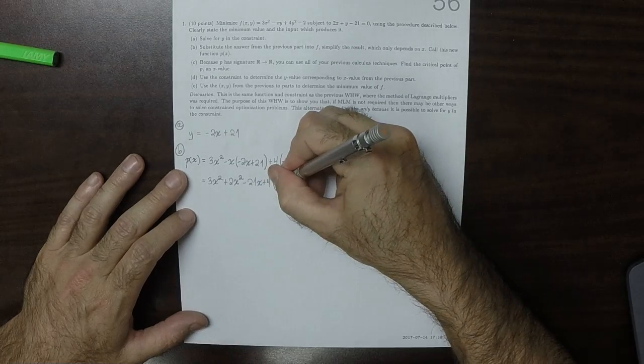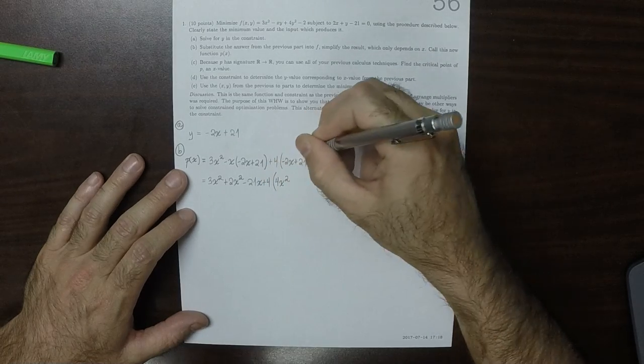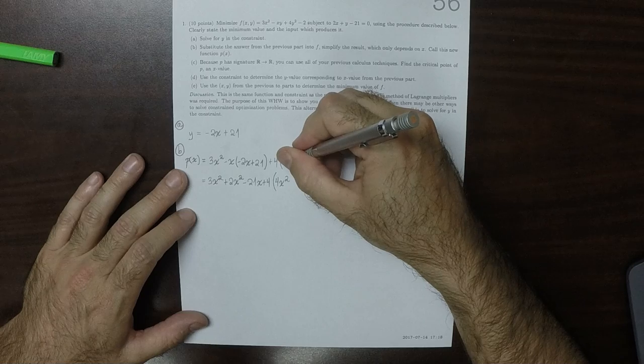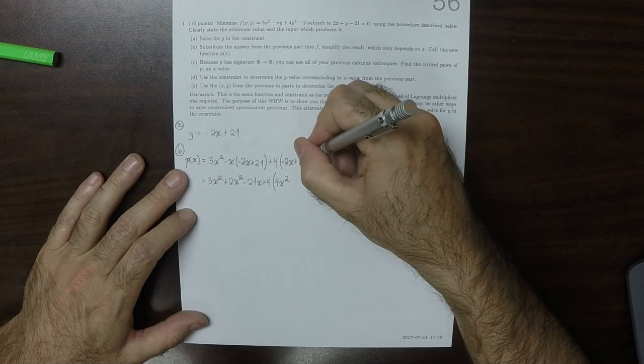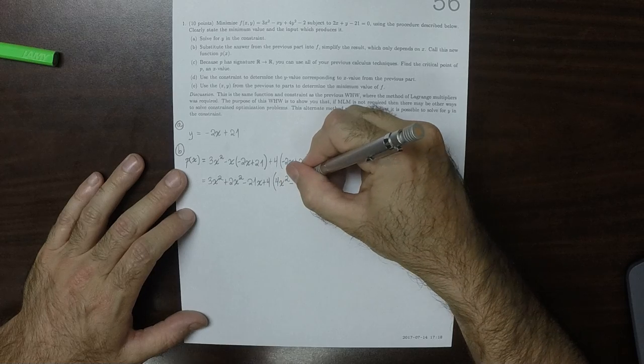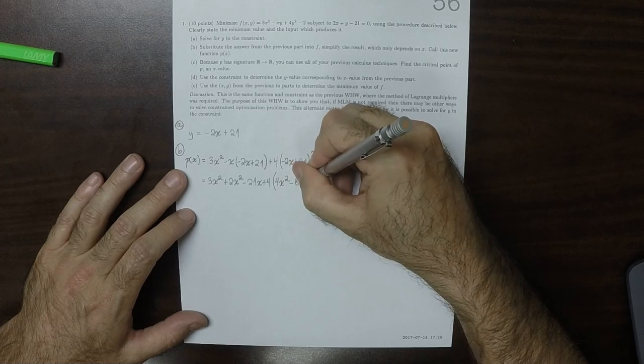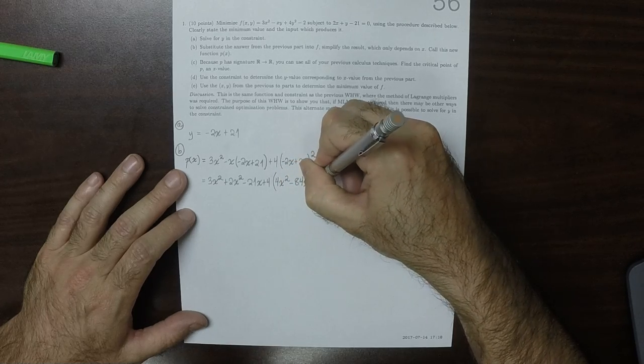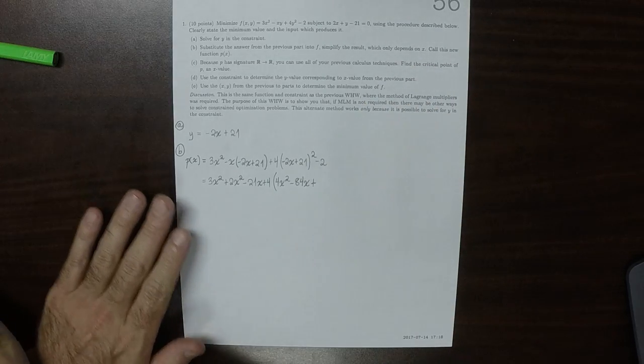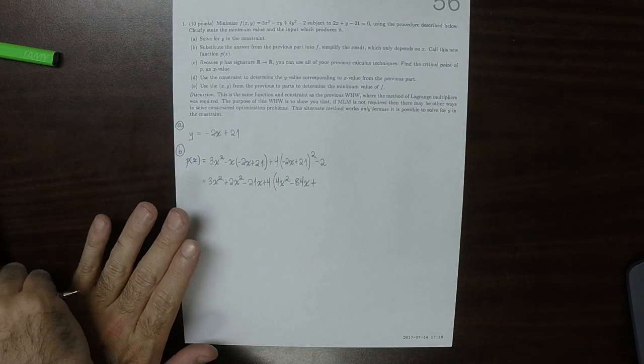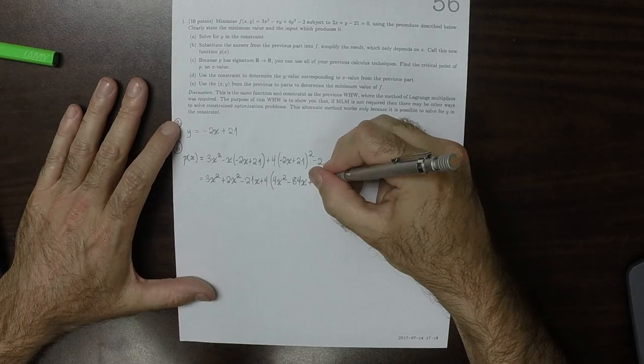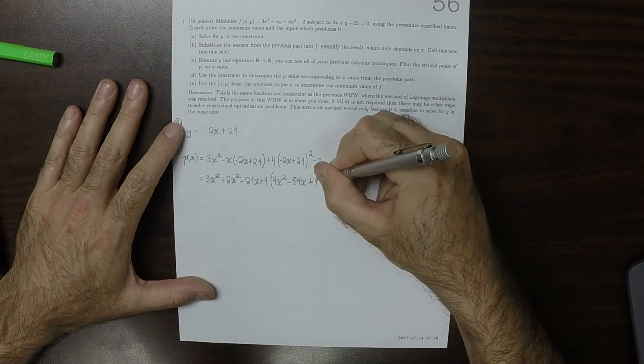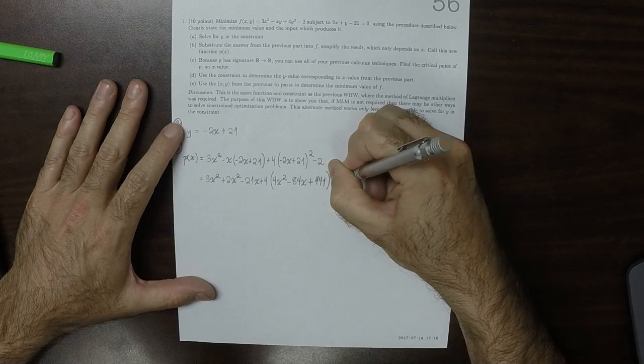So that'll be plus 2x squared and then minus 21x plus 4. And now I'll foil this out. So that'll be 4x squared minus 42 minus another 42, so minus 84x, and then plus 21 squared, whatever that is, 441. And then minus 2.